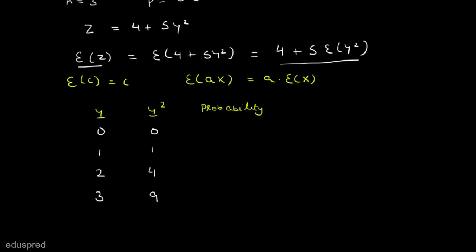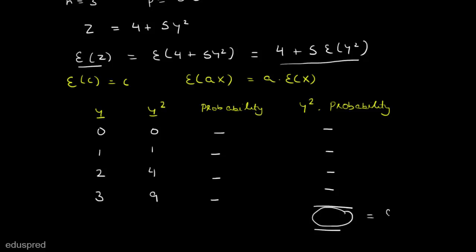I am not computing the probability values here because I will show you a shortcut method instead. If you choose to go with the direct method, you would find the probabilities using the binomial formula, multiply each Y squared value by its corresponding probability, sum those products, and the result would be your expected value of Y squared. However, that method is time-consuming, so let me show you the shortcut.